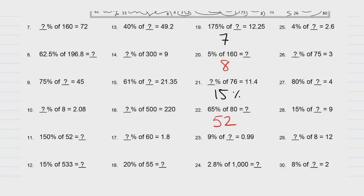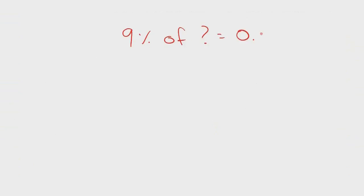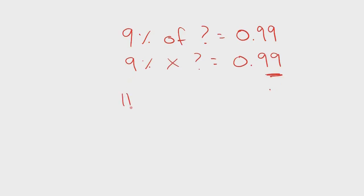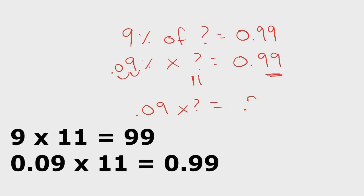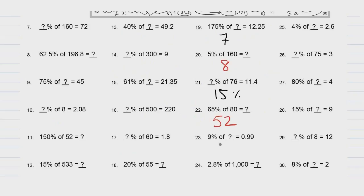Problem 23: 9% of something equals 0.99. The only way to get two nines is to multiply the 9 by 11. We need to figure out where the decimal is — is it 1.1 or 0.11? Change 9% to a decimal: move 1, 2, that makes it 0.09. So ask yourself: what times 0.09 equals 0.99? It's got to be 11 exactly. This is 11.